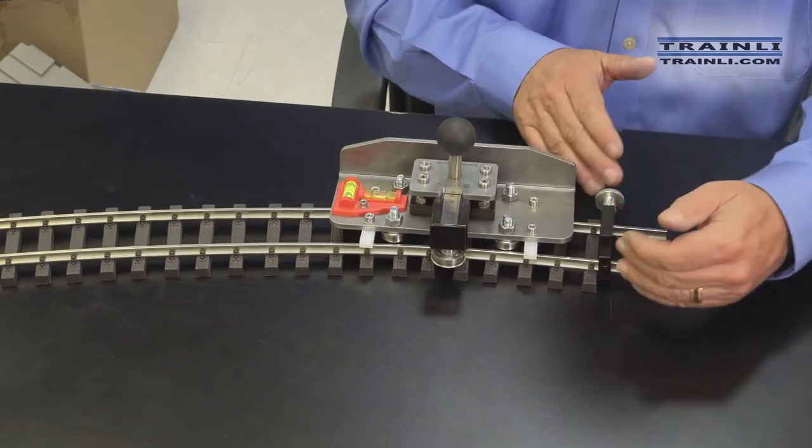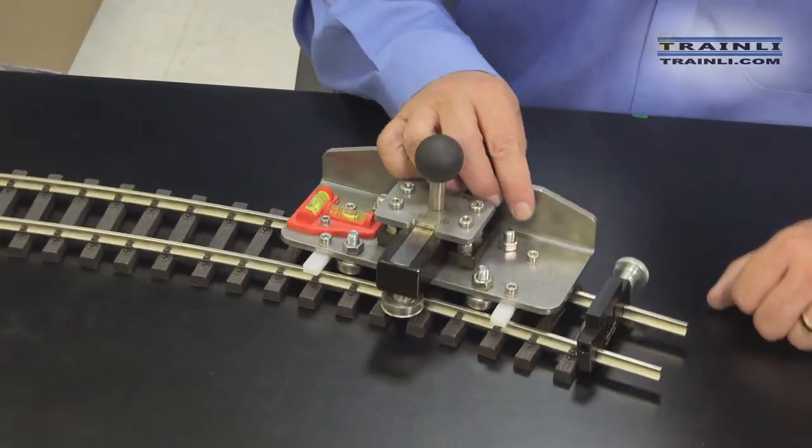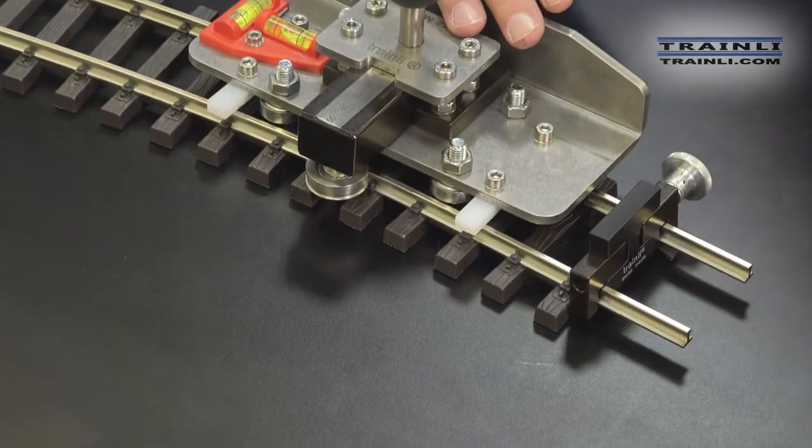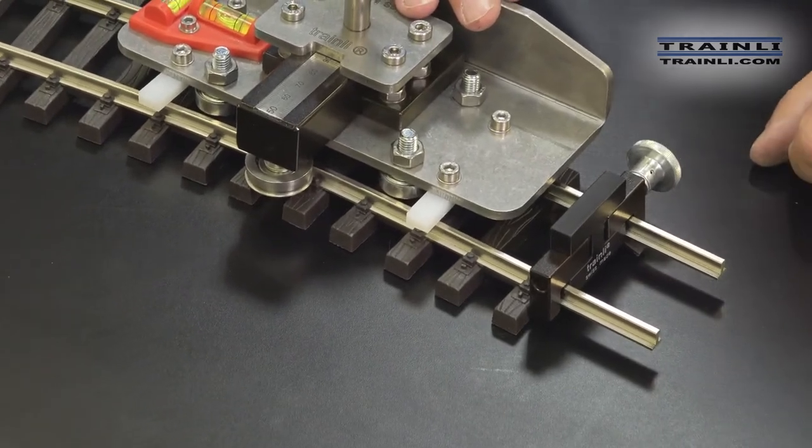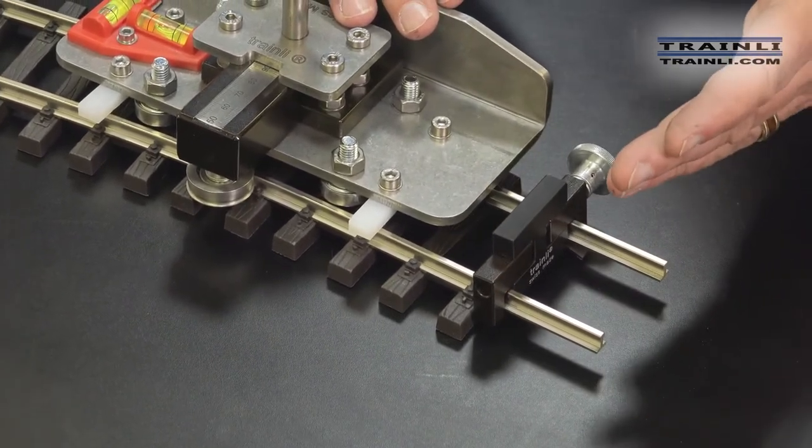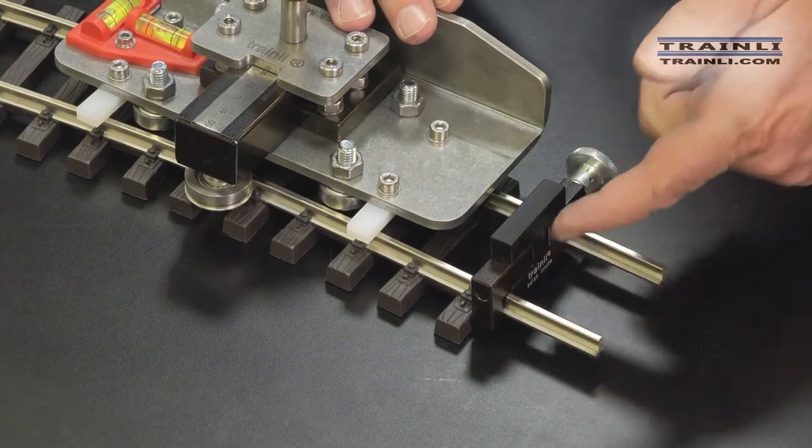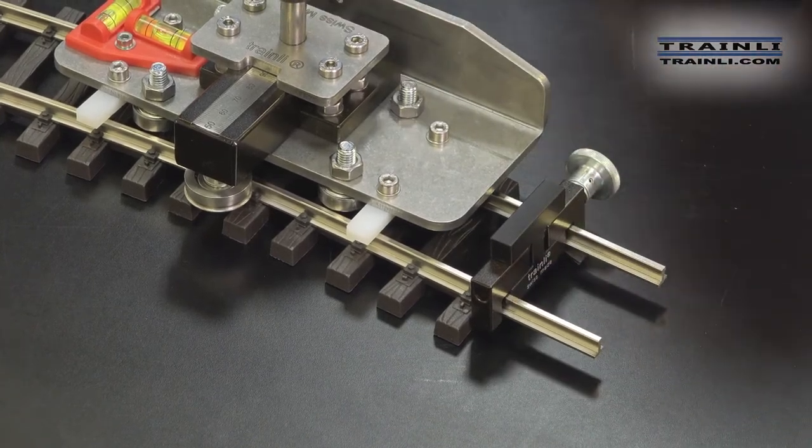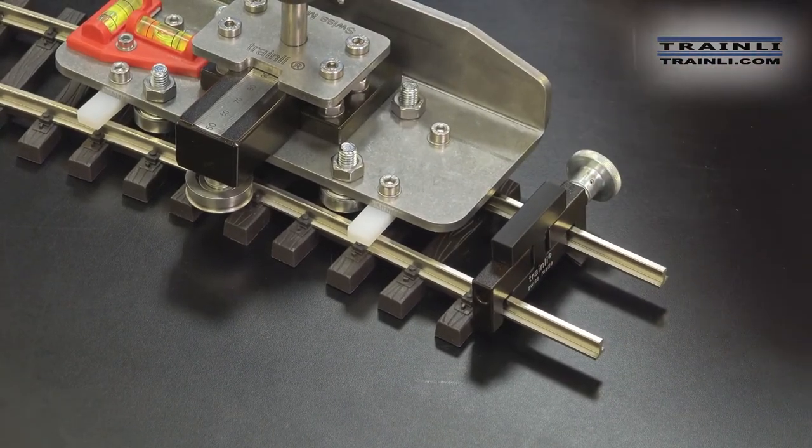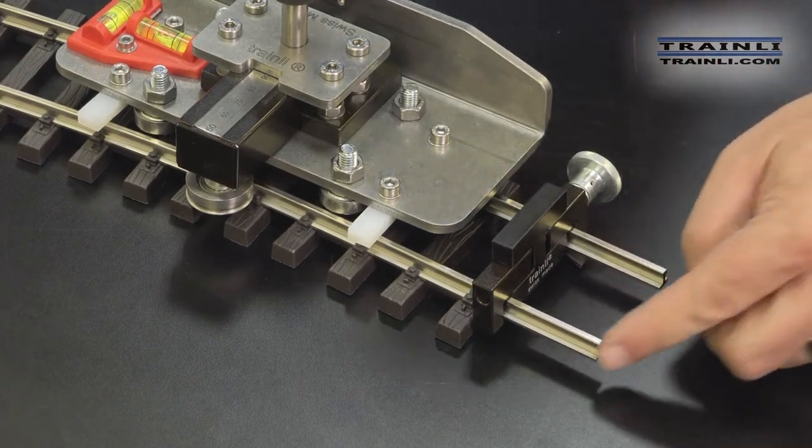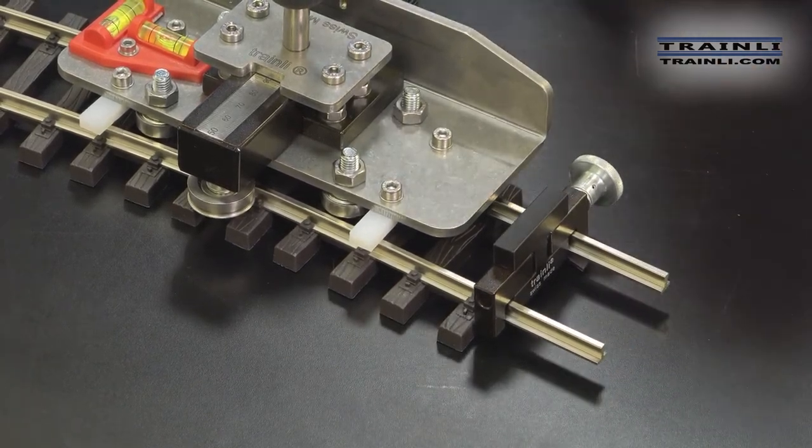This is also a great little cutting jig if you want to trim your rails. You can attach this to the track and whatever cutter you like to use, whether it's a Dremel or a grinder or a hand saw, you just go ahead and cut right here. It will give you a nice 90 degree cut and keep your two rails at the exact same distance.